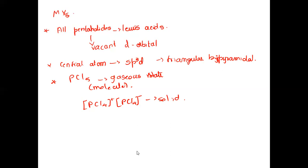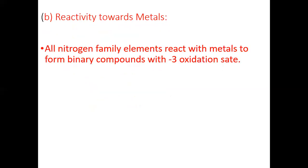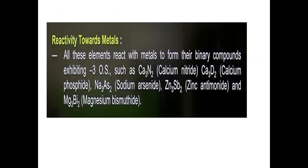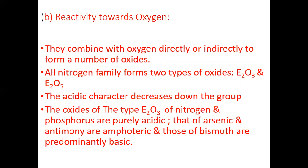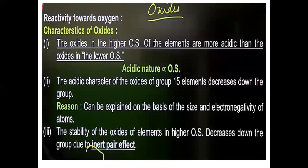With this we have almost finished halide reactivity. Moving to the next topic — reactivity towards oxides and metals. When elements of the nitrogen family combine with oxygen, they form oxides. The two main types are E2O3 and E2O5.